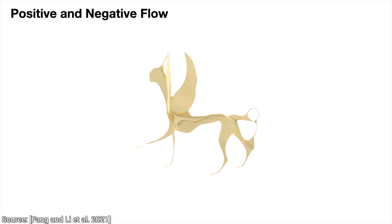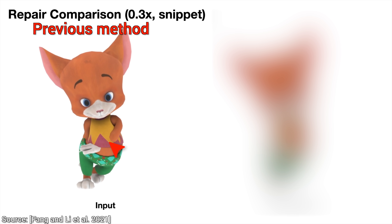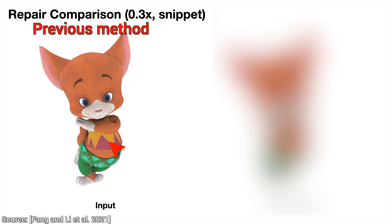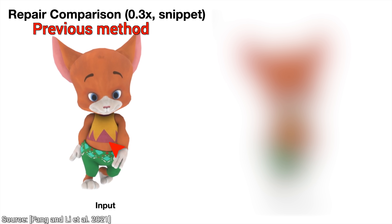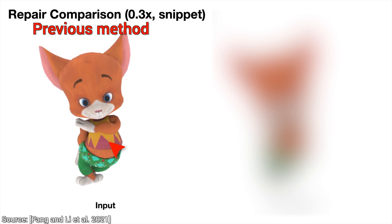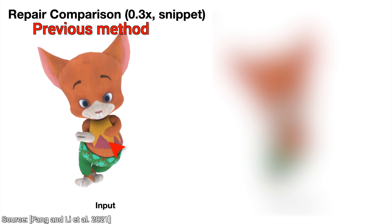Now, talking about overlaps, let's see this animation sequence simulated with a previous method. Oh no! The belly is not moving, and, my goodness, look at that! It gets even worse. What is even worse than a belly that does not move, of course, is intersection artifacts.